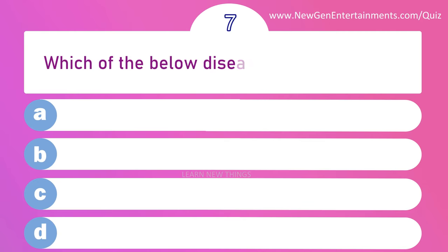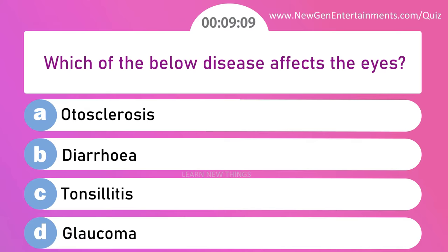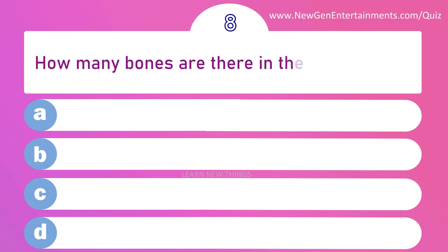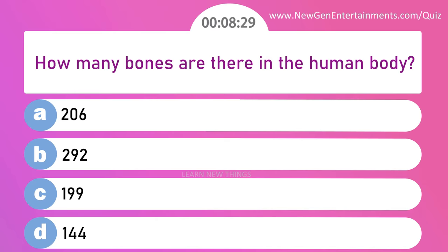Which of the below diseases affects the eyes? Options are: A) Otosclerosis, B) Diarrhea, C) Tonsillitis, and D) Glaucoma. How many bones are there in the human body? Options are: A) 206, B) 292, C) 199, and D) 144.